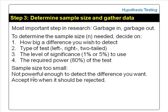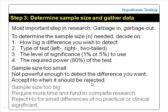A sample size that is too small may not be powerful enough to detect the difference we wish to detect. This usually results in accepting the null hypothesis when it should be rejected. However, a sample size that is too big will require more time and funds to complete the research. It will also reject the null hypothesis for small differences that may not be of any practical or clinical significance. For example, a hypothesis test may conclude a weight-reducing program that reduces the weight of participants by one kilogram to be statistically significant. This could be due to a very large sample size, n, making the standard error very small. But a reduction of one kilogram in weight is of no practical or clinical significance.